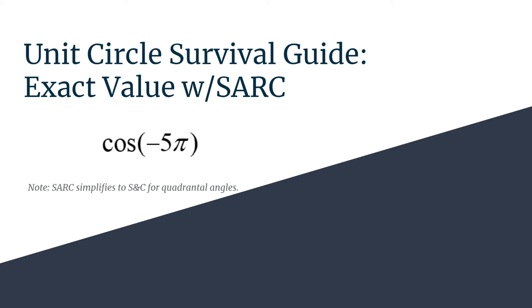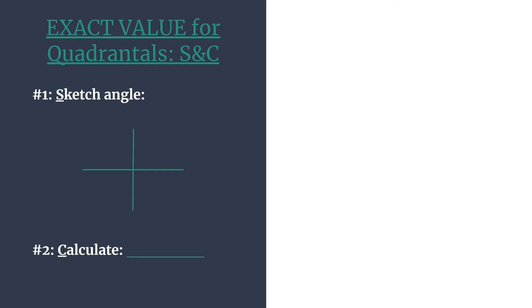So we are abbreviating this method to the S and C method. Here's our quick outline for this method. We only need to sketch the angle's terminal side to get the coordinates and then we'll calculate our trig ratio, and we're doing that for the cosine of negative 5π.